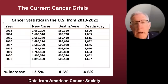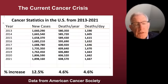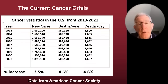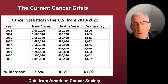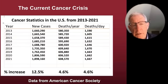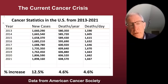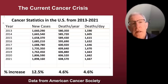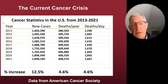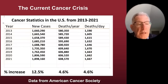Thanks for the introduction. It's nice to be here today to give you an overview of our research on cancer as a metabolic disease. The information will have major implications for how we approach and manage the disease. This next slide shows data I collected from the American Cancer Society, which publishes cancer statistics annually. Deaths per day is simply deaths per year divided by 365. These numbers span 2013 to 2021.